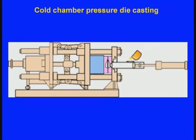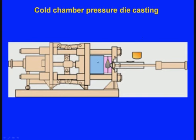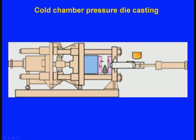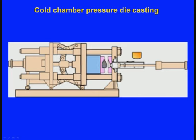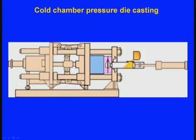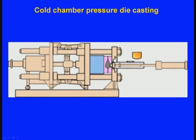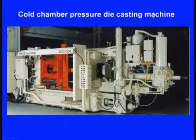Here we can see the animation of the cold chamber pressure die casting process. There is a fixed die and a movable die. The cylindrical chamber receives poured molten metal, and the piston or ram exerts pressure inside the two dies. The metal solidifies and the casting is taken out. The cycle repeats — metal is poured again, pressure is applied, and the casting is ejected.